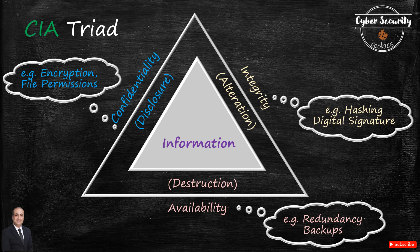Integrity is achieved by hashing — a one-way algorithm we'll discuss later — and digital signatures. Availability is achieved through redundancy and backups, meaning you have multiple copies available, a backup available, or redundancy with your service provider.